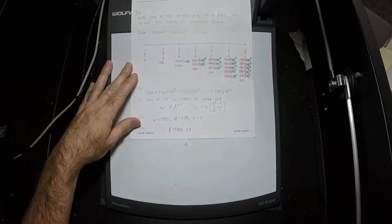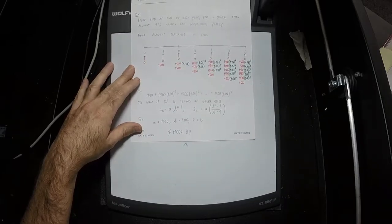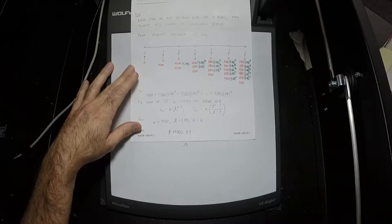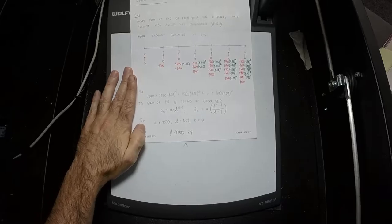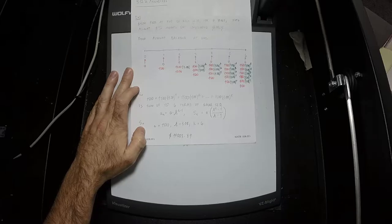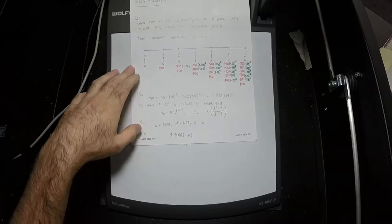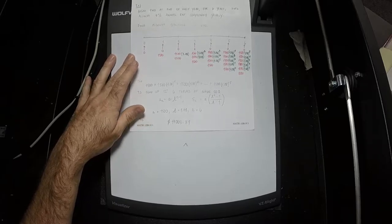The answer is $11,003.89 when you round to the nearest cent. That is the total in the account. Now, how much total was paid? $9,000. So how did the $9,000 magically become $11,000? Interest. But I'd be sad if you got out of class and didn't understand what interest means.